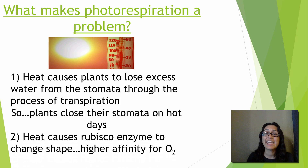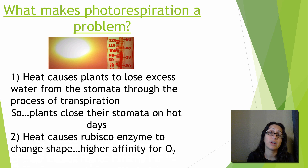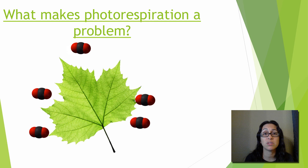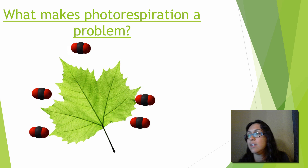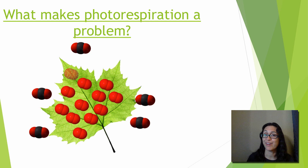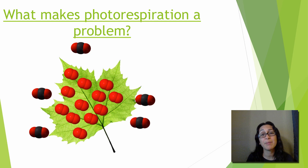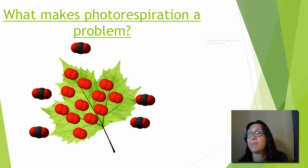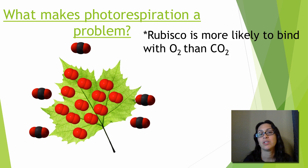Heat also causes the Rubisco enzyme to change shape slightly, and that change allows it to bind oxygen better than carbon dioxide. So when stomata are closed on a hot dry day, carbon dioxide can't get in, and oxygen begins to build up inside the leaves. The combination of closed stomata and the changed shape of Rubisco means it's more likely to bind oxygen than carbon dioxide, leading to the dead-end process of photorespiration. Rubisco becomes more likely to bind oxygen than CO2.